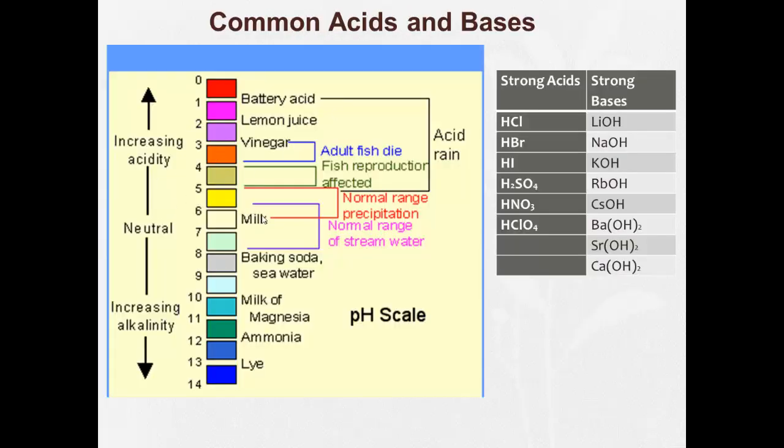Just so you get an idea, some common acids and bases. Neutral at 7 would be pure water. And stream water can go from 7.5 down to about 5.5 on the low end. As soon as you start getting much more acidic than that, when you get down to below a 5, fish can have problem reproducing. Lower than that, adult fish can start to die, which is why acid rain is a problem.